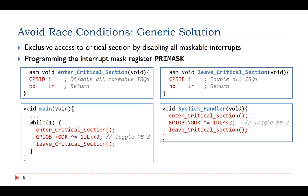In this simple example, the SysTick interrupt handler does not have to call this pair of functions. However, in a more complex system, calling these two functions to guard the critical section is necessary. For example, another interrupt with a higher urgency may preempt the current interrupt and modify shared variables.